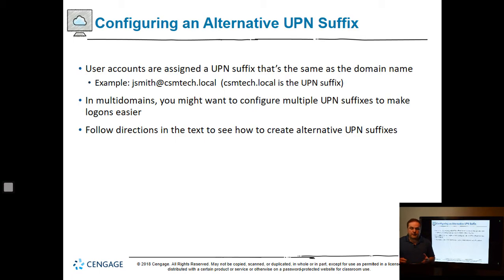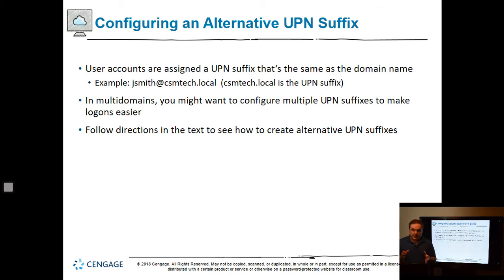We need to configure an alternate UPN suffix. User accounts are assigned a suffix that's the same as the domain. For instance, GSM at CSM.tech.local — that's your UPN. In multi-domain environments, you might want to configure multiple UPN suffixes to make logons easier.